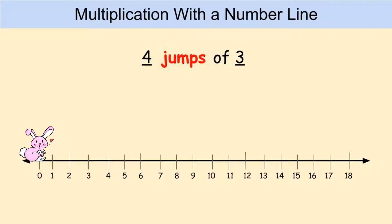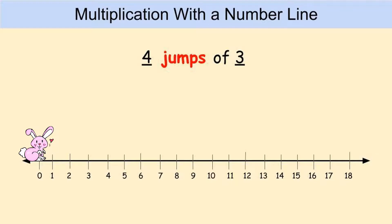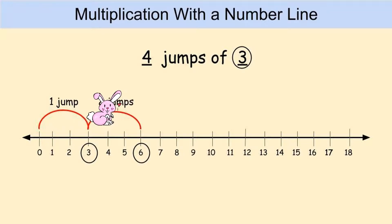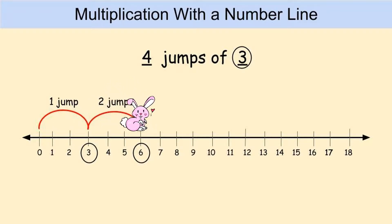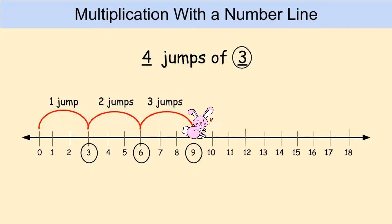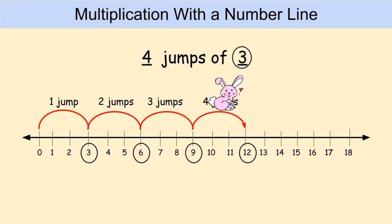Our rabbit is going to start on zero and jump to three — that's one jump. Then we do it again: one, two, three, and we land on six. We have to do this two more times. For jump number three, we count one, two, three, and land on nine. And finally, one, two, three — we land on twelve.